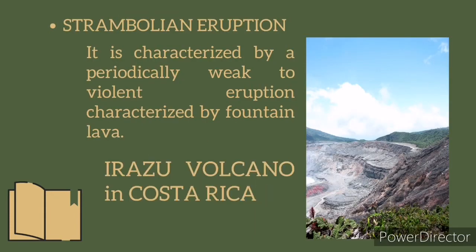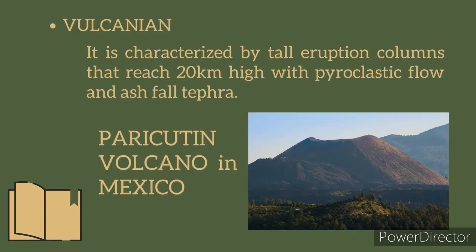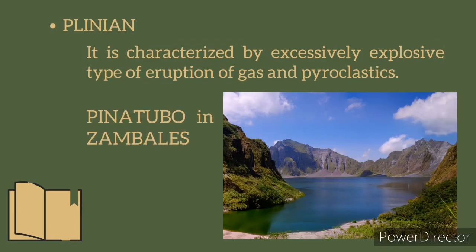Then we also have Strombolian eruption, characterized by periodically weak to violent eruptions with fountaining lava, just like the Arenal volcano in Costa Rica. Another kind is Volcanian eruption, characterized by tall eruption columns that reach up to 20 km high, with pyroclastic flow and ash-laden tephra, like that of Paricutin volcano in Mexico. Finally, we have Plinian eruption — an excessively explosive type of eruption of gas and pyroclastics, just like our Pinatubo volcano in Zambales.